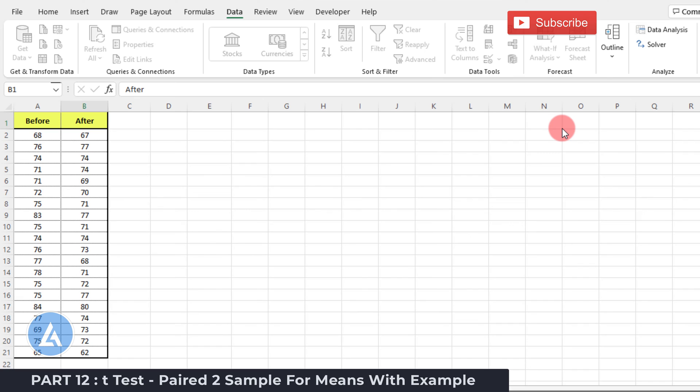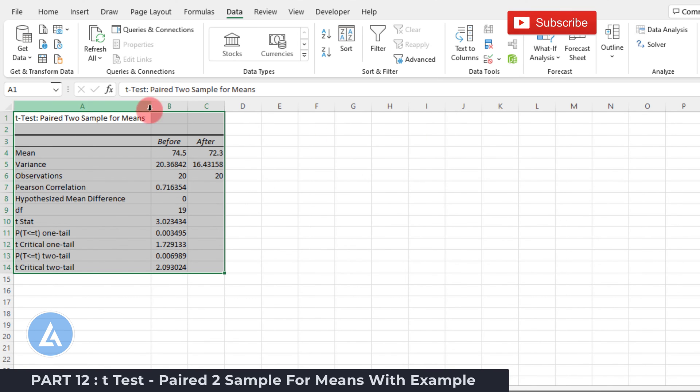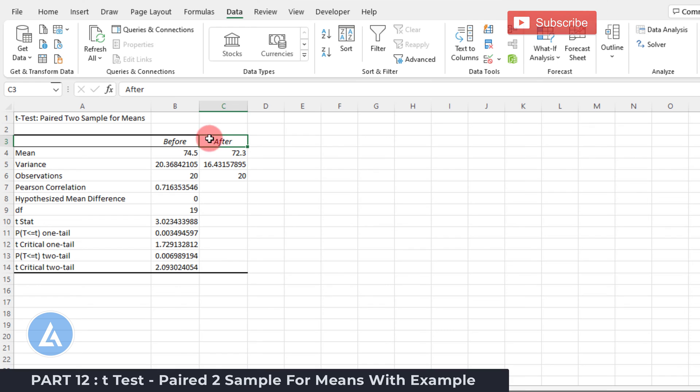Once you click on OK, we will be getting the results for T-Test Paired Two Sample for Means. Here we are getting the detailed results for before and after. Now let's go into the detail to understand the interpretation of the results.